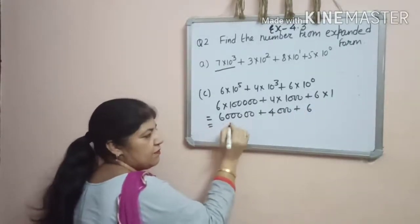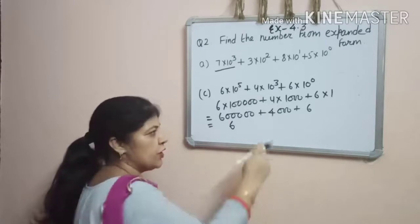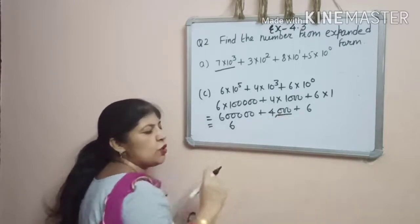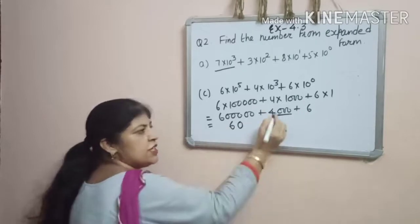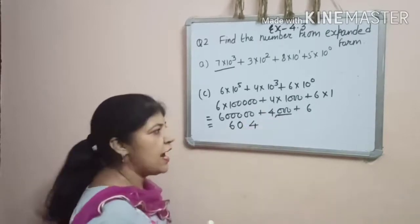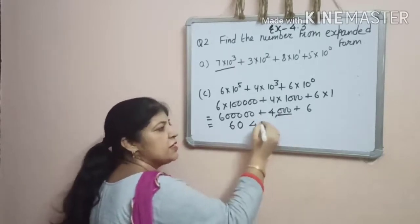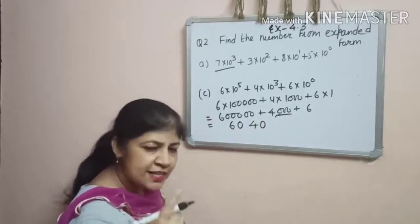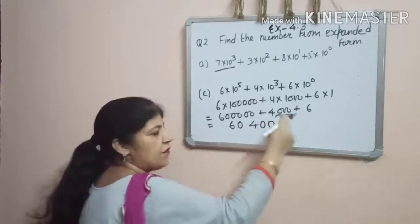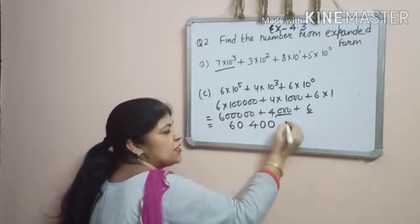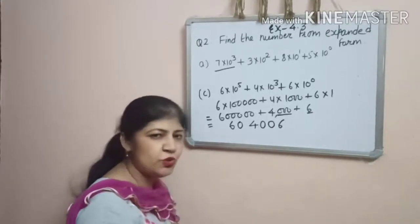The first digit will be 6. The next place is 10,000, but we don't have it, so we write 0. The 1,000 digit is given as 4. After 1,000, the 100's place is also missing, so write 0. The 10's place is also missing, so write 0. And the 1's place is given as 6.